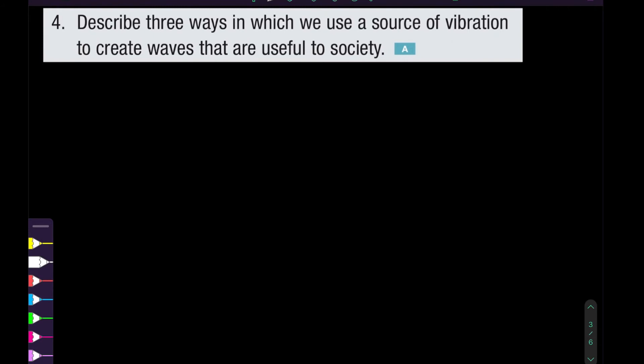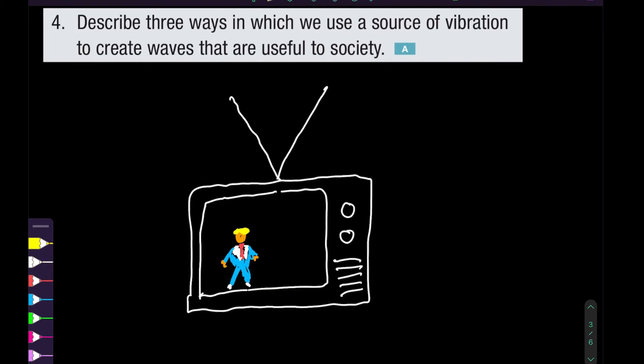Question number four: Describe three ways in which we use a source of vibration to create waves that are useful to society. One way is vibrations in the antenna itself. Here we have an old style TV, and we have the ear, the eye, the nose, the mouth.